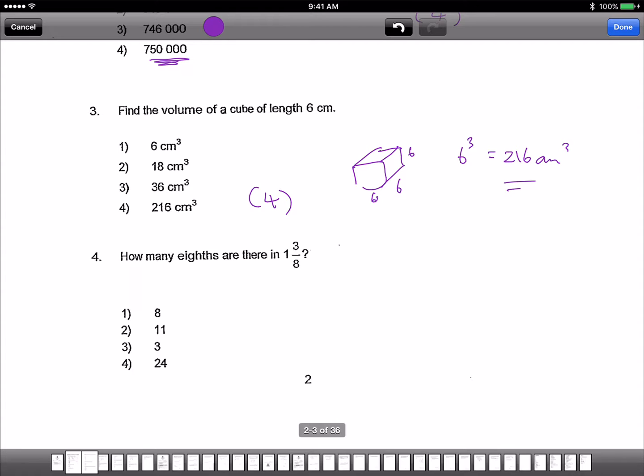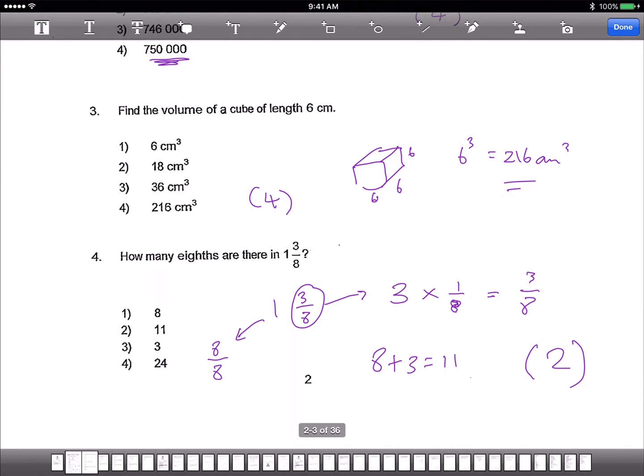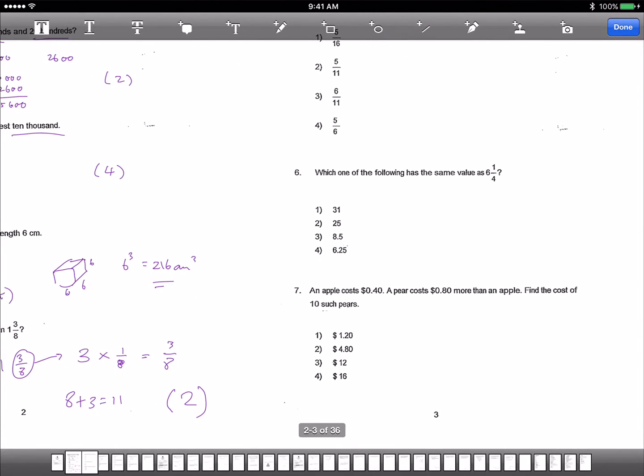And how many 8s are there in 1 and 3 out of 8? So this is 1, 3 out of 8. I break down into 2 parts. This part has got 3 times 1/8. And this 1 whole is actually 8 out of 8. So 3 times 1/8 is actually 3 over 8. So 8 plus 3 is 11. And the answer is 2. So far so good.